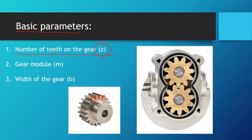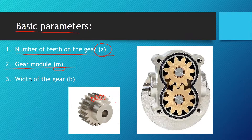The second parameter we need is the gear module. If you studied machine design, you know that the module is the unit of size indicating how big or small a gear is. It's the ratio of the reference diameter of the gear divided by the number of teeth. The last basic parameter is the width of the gear, b.